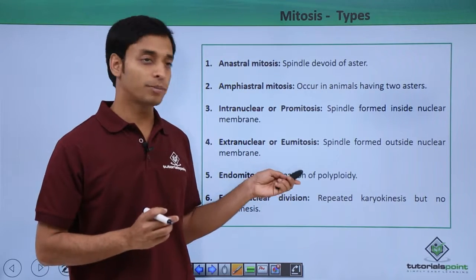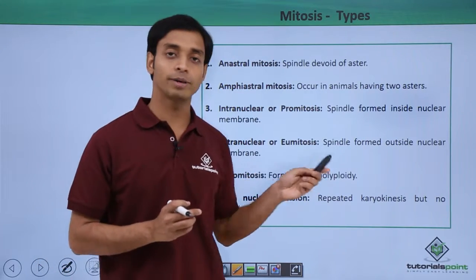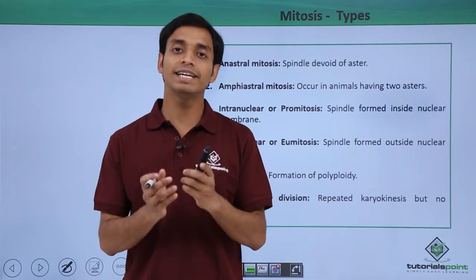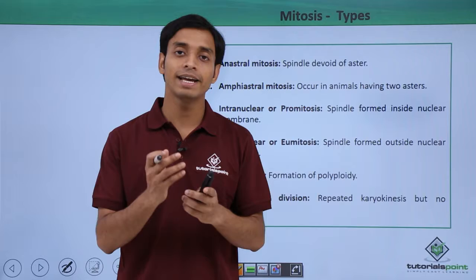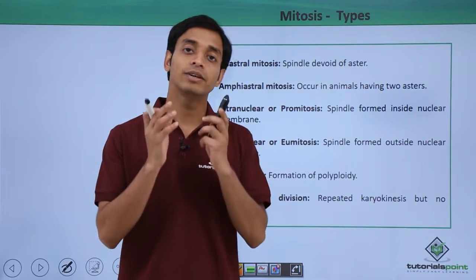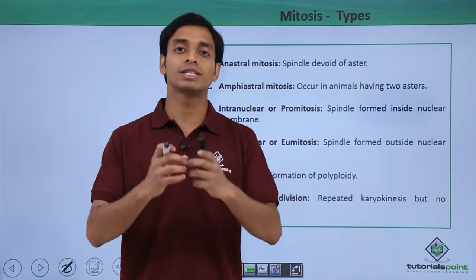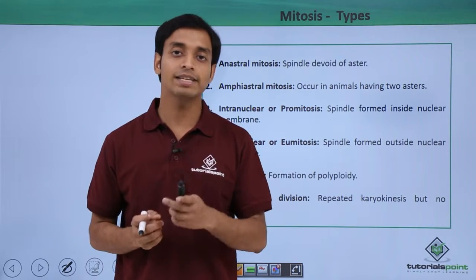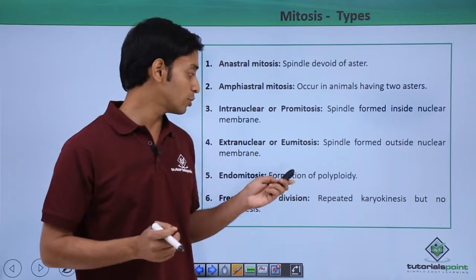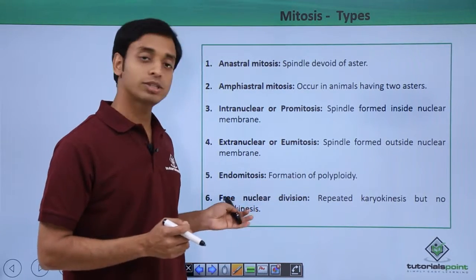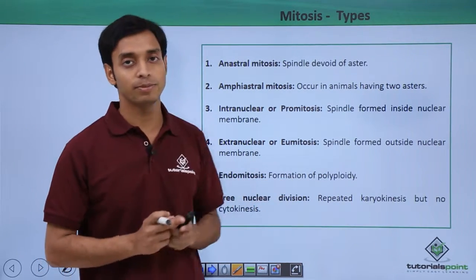The fifth type is known as endomitosis. This results in the formation of polyploidy because the chromosomes and the DNA duplicate and replicate, but fail to segregate or separate. Hence it results in the formation of polyploidy.